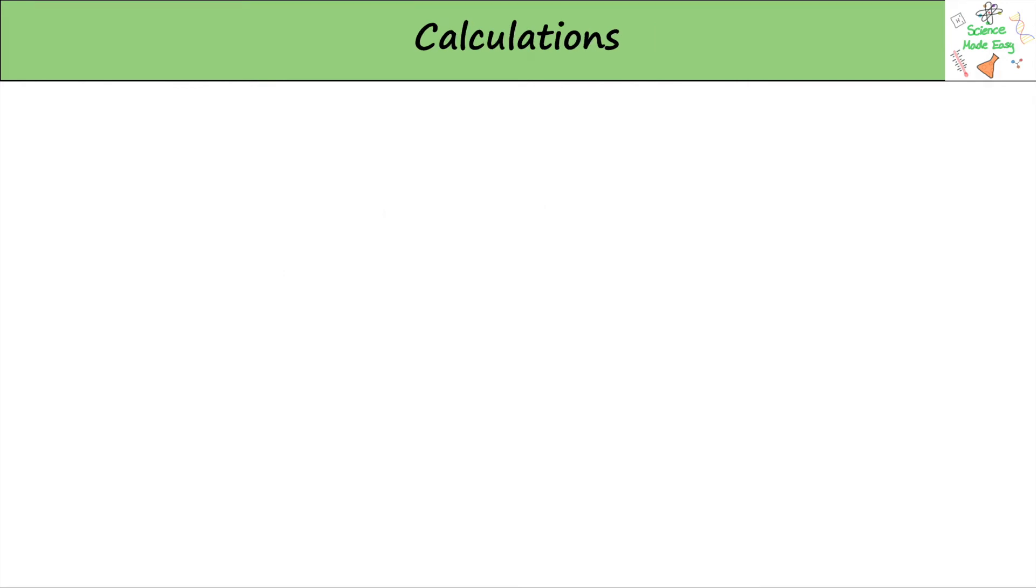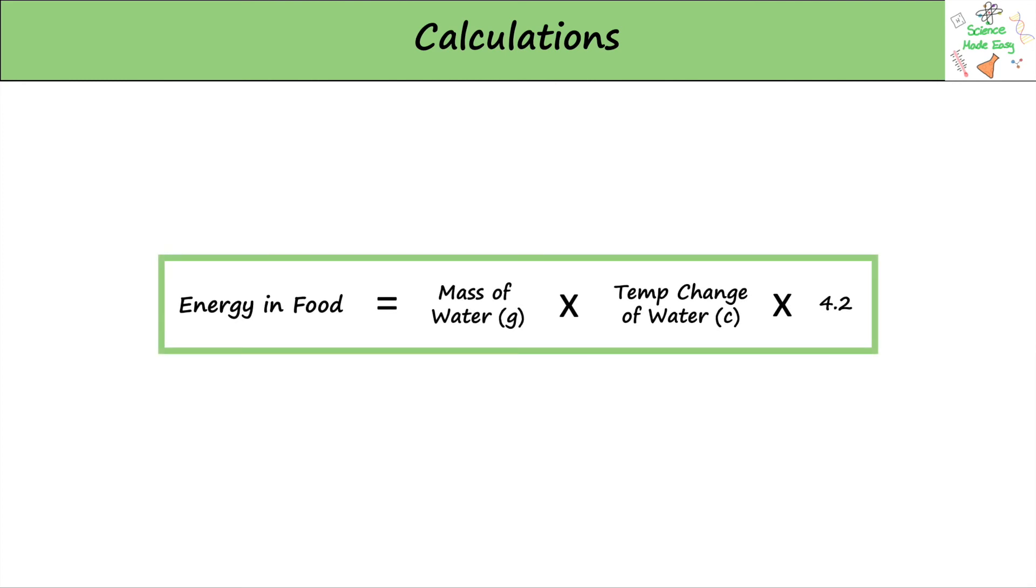We can then calculate the energy in food by multiplying the mass of the water by the temperature change of the water by 4.2. The reason we multiply it by 4.2 is because this is water's specific heat capacity. This is just how much energy we need to give it to increase its temperature by 1 degree.